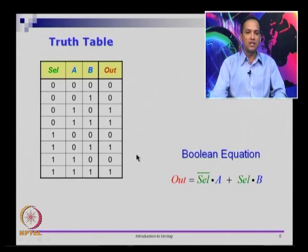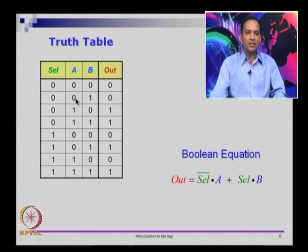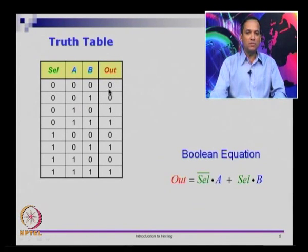Now we can think about this in a truth table format. Let us see what are the different inputs we have: select, a, and b — so there are 3 inputs. If there are 3 inputs, there are 8 combinations that are possible, and we have those 8 combinations listed here. For these 8 combinations, let us see how we get the output. We said if select is 0, a should appear in the output. The first 4 rows have select equals 0, and this part of the output column is simply a copy of the first 4 rows of a — meaning when select is 0, we have copied a to the output, which is what we wanted.